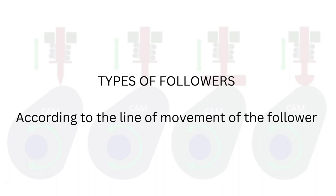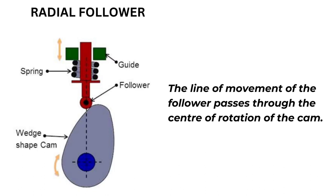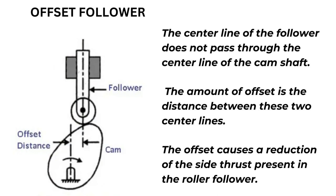Types of followers according to the line of movement of the follower. Radial follower: the line of movement of the follower passes through the center of rotation of the cam. Offset follower: the center line of the follower does not pass through the center line of the cam shaft. The amount of offset is the distance between these two center lines. The offset causes a reduction of the side thrust present in the roller follower.